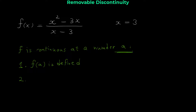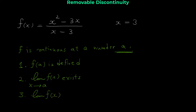The second condition is that the limit of f(x) as x approaches a exists. And finally, the third condition is that the limit of f(x) as x approaches a is equal to f(a). These are the three conditions for continuity of a function at a point.